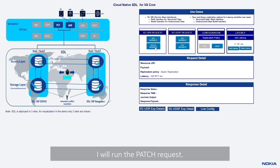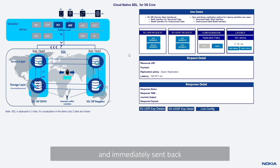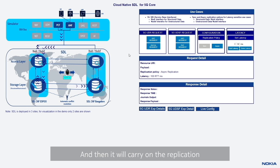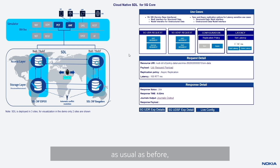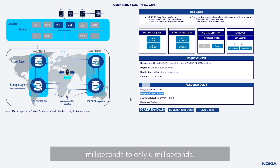Running the PATCH request — the request comes to the access layer via the NUDR interface and is sent to the storage layer. The mastering node immediately updates the local database and immediately sends back the response to the client, then carries on replication as usual. There is no change to the replication flow itself. If you notice, the response time has now significantly reduced from 112 milliseconds to only 6 milliseconds.